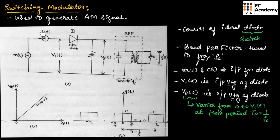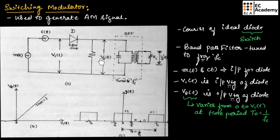The amplitude of the carrier signal is very much greater than the amplitude of the message signal. That's why we can say the diode on-off operation is controlled by the carrier signal C(t). So the output voltage V2(t) of the diode will depend upon the carrier signal C(t). The output voltage V2(t) will be equal to V1(t) when the carrier signal is positive, and V2(t) will be equal to 0 when the carrier signal is negative.